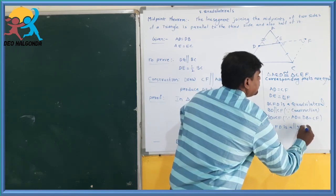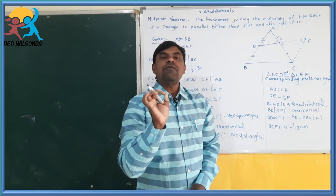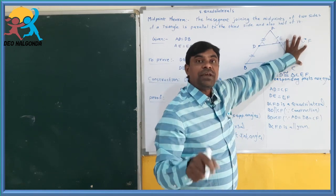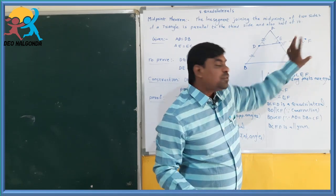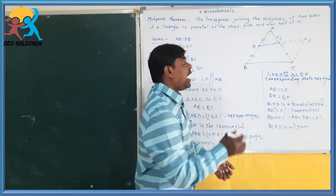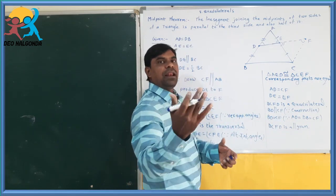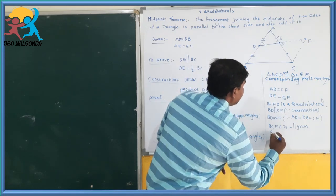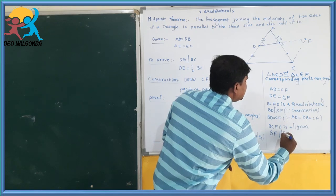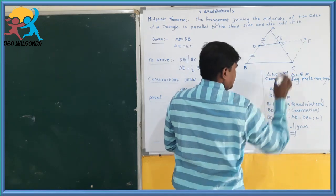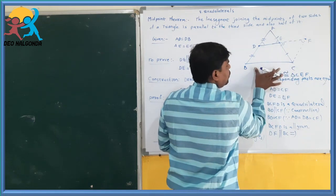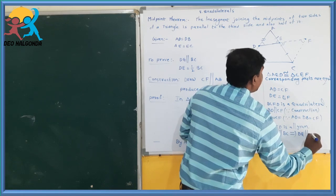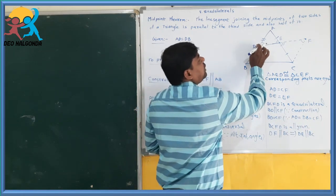Here BCFD is a parallelogram. In a parallelogram, one pair of opposite sides are parallel and equal. Here BD is parallel to CF and BD is equal to CF, so BCFD is a parallelogram. If it is a parallelogram, then opposite sides are parallel and equal. So DF is parallel to BC, and DE is parallel to BC since DE is part of DF.